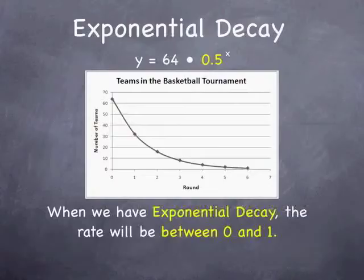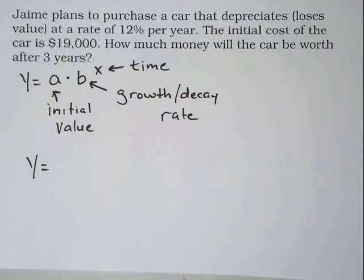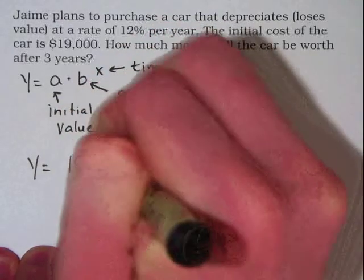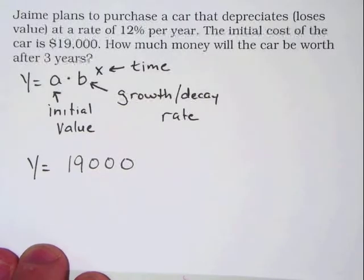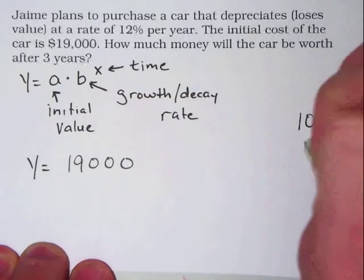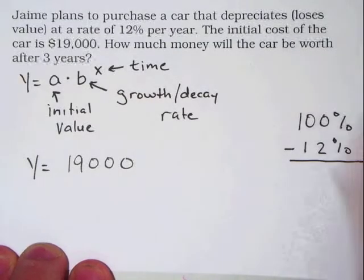Our first example says: Jamie plans to purchase a car that depreciates or loses value at a rate of 12% per year. The initial cost of the car is $19,000. How much money will the car be worth after three years? Our problem states that the initial value of the car is $19,000. Since the value of our car is depreciating at a rate of 12% each year, we know this is an example of exponential decay. To calculate our decay rate, we need to subtract 12% from 100% of the value of the car, giving us a decay rate of 88%.